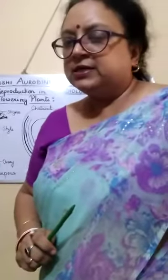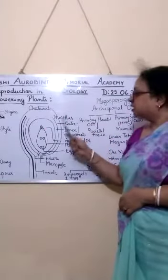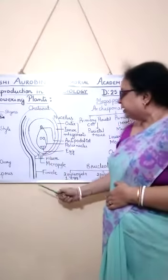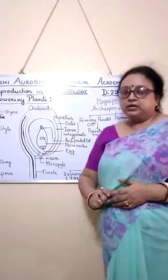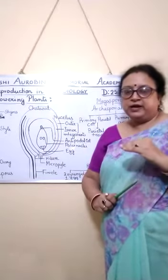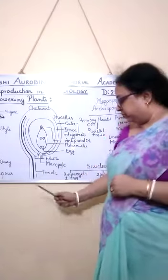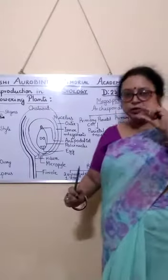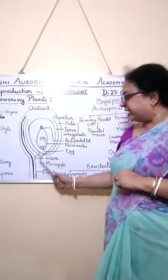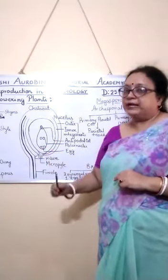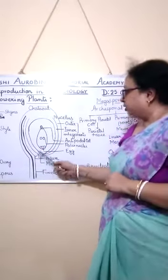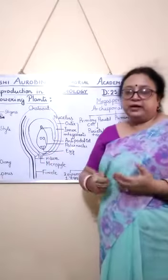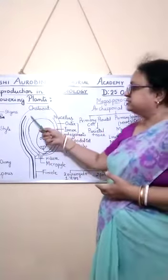Now we discuss about the structure of the ovule. The structure of the ovule is mainly of two parts. One is known as the funicle and one is the body. This funicle is a very short structure which attaches the ovule body with the placenta. And this body is made up of parenchyma tissue which is known as nucellus.